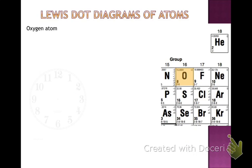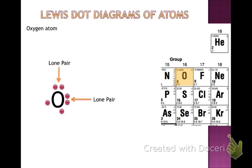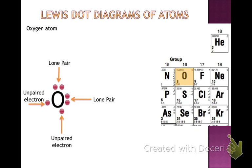Next we'll do the same thing for oxygen. Find oxygen — it's located in period 2 and group 16. Its symbol is O. Since oxygen is in group 16, it has 6 valence electrons. We drop off the electrons at 12, 3, 6, and 9, then another 2 at 12 o'clock and 3 o'clock. This gives us 2 open spots. Oxygen has lone pairs — 2 electrons sitting by themselves not attached to anything. We also show unpaired electrons that haven't been shared with any other element yet.